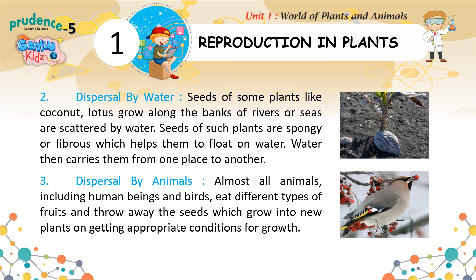Dispersal by water: seeds of some plants like coconut and lotus grow along the banks of rivers or seas and are scattered by water. Seeds of such plants are spongy or fibrous, which helps them to float on water. Water then carries them from one place to another.